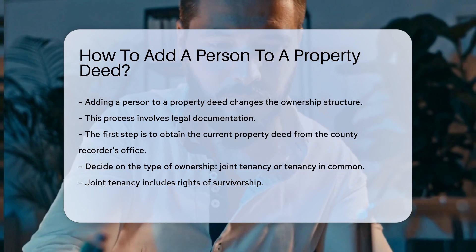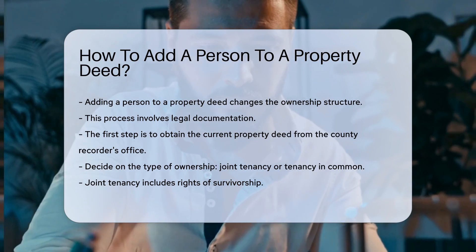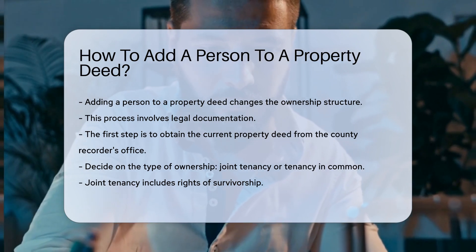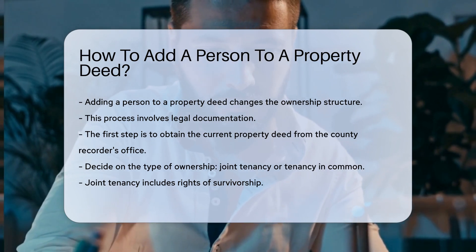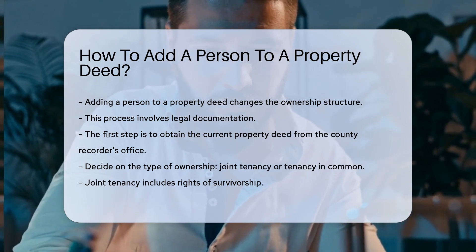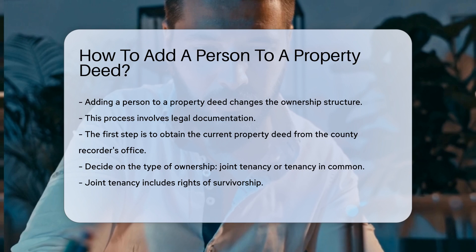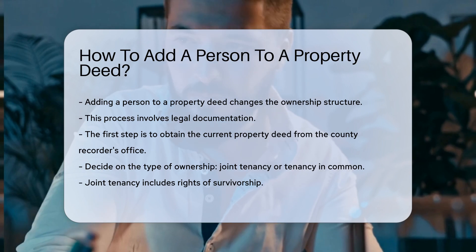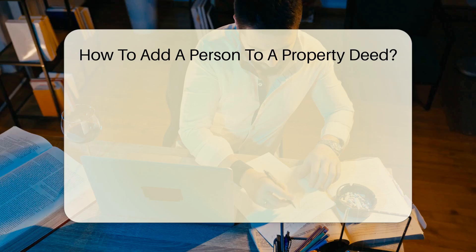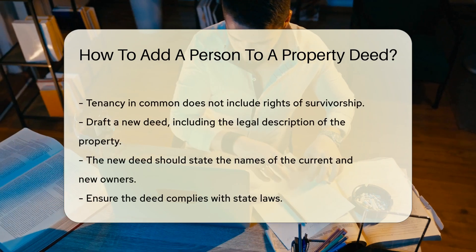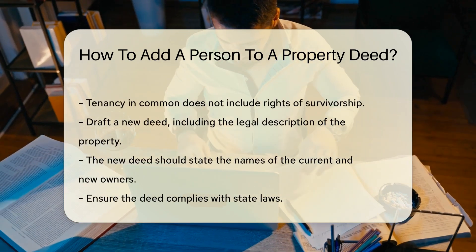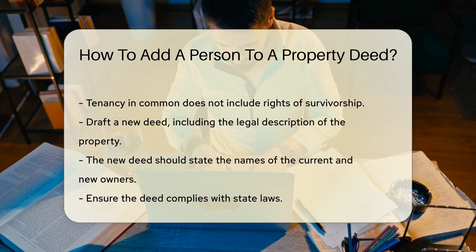Next, you need to decide on the type of ownership. Options include joint tenancy or tenancy in common. Joint tenancy includes rights of survivorship, while tenancy in common does not include rights of survivorship.